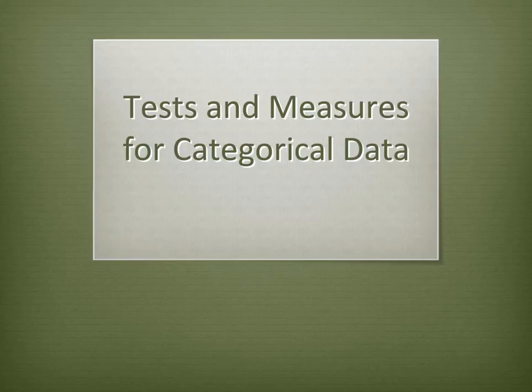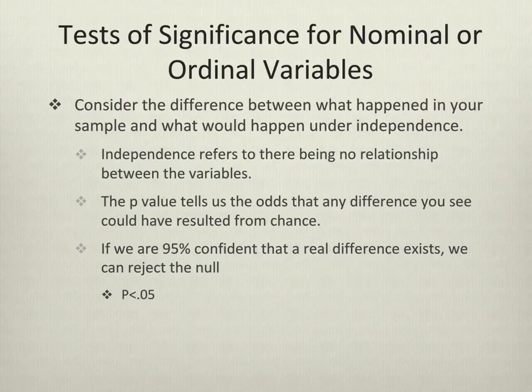In this unit, I'm going to go over tests of significance and measures of association for categorical data. Don't forget that means nominal and ordinal variables. I'm going to begin by discussing tests of significance for nominal or ordinal variables. Remember, tests of significance tell you whether or not a relationship exists between your variables, not how strong that relationship is.